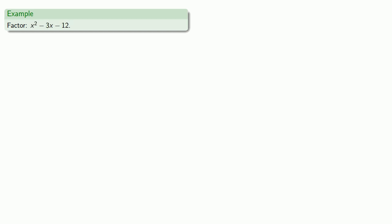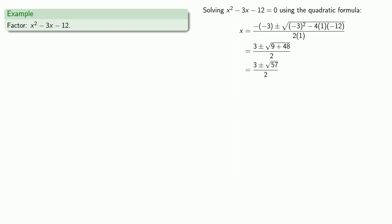We can run into a similar problem with x squared minus 3x minus 12. Solving x squared minus 3x minus 12 equals 0 using the quadratic formula, we get down to this point.